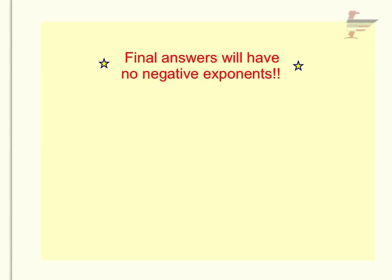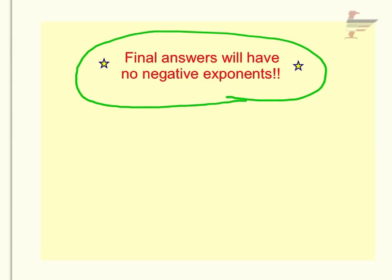Before we get to the examples, just know that your final answers will have no negative exponents. If you get an answer and you still have a negative exponent, that means there's more simplifying to do and you'd be marked off for that answer. It's kind of like not reducing a fraction far enough — you just have to simplify it as far as you can, so don't leave any negative exponents.